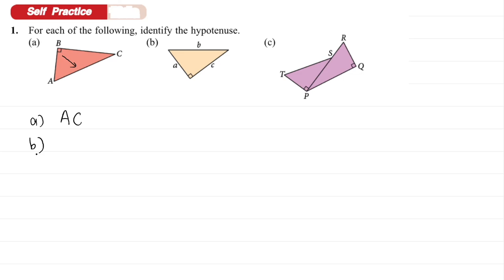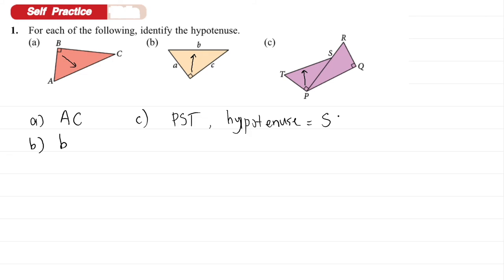Looking at B: in the right angle triangle, look at the side opposite to the right angle — so the hypotenuse is B. For C, there are two triangles: triangle PST and triangle PQR. For triangle PST, the right angle is here, so the side opposite to it is the hypotenuse, which is ST. For triangle PQR, the hypotenuse is opposite to the right angle — the whole line here — so the hypotenuse is PR.